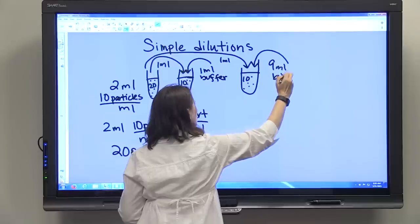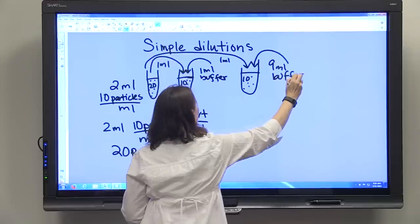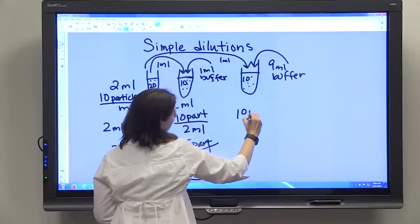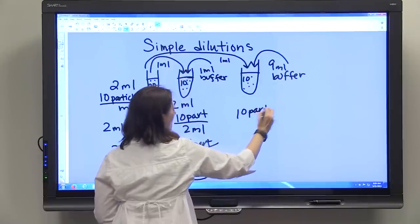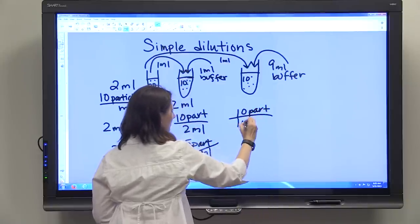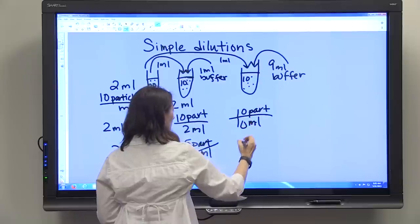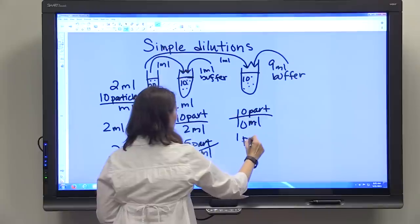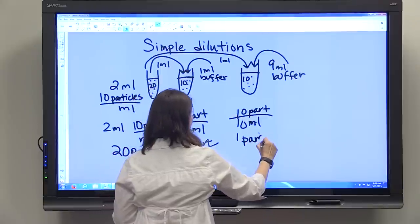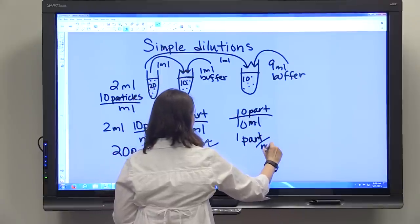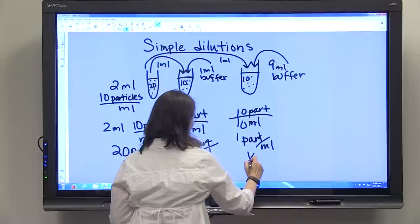then we're going to have 10 particles per 10 ml's, or 1 particle per ml, that's a 1 tenth dilution.